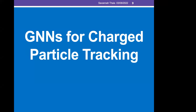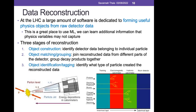Now I'll talk about a specific reconstruction task called particle tracking. There's a large amount of dedicated software for forming physics objects from raw detector data. This is a great place to use machine learning because traditional approaches based on derived physics variables created information loss. Machine learning, designed to work on high-dimensional datasets, helps avoid that loss and allows us to work directly from detector readouts.